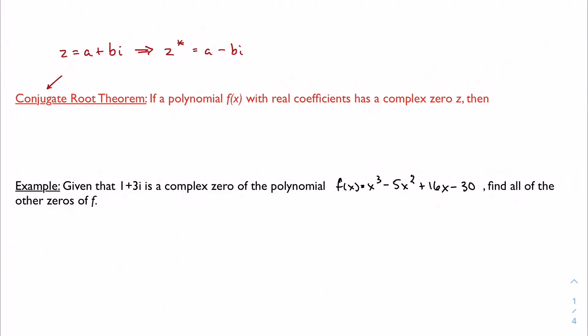So if a polynomial f(x) with real coefficients has a complex zero z, then the complex number z star that is the conjugate of z